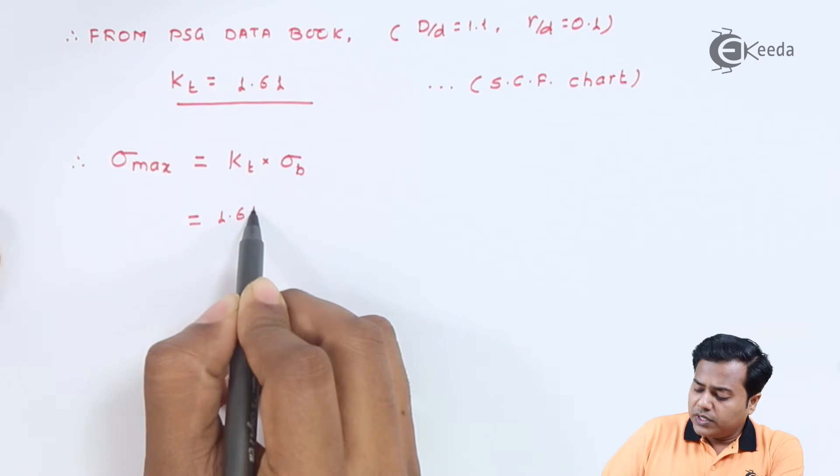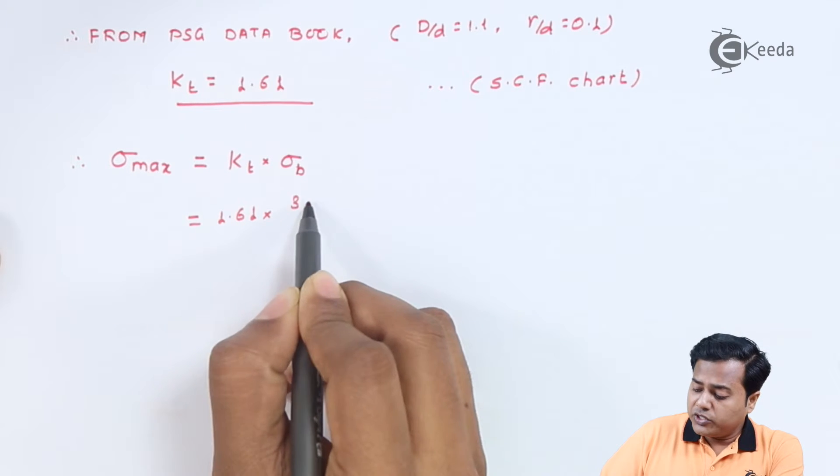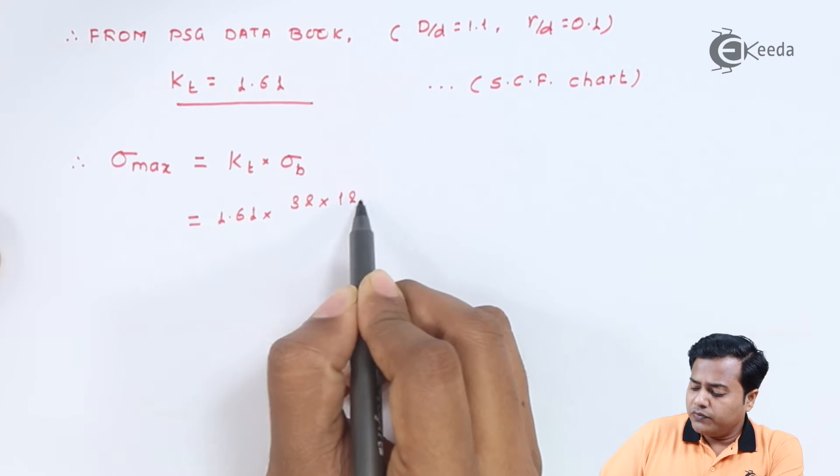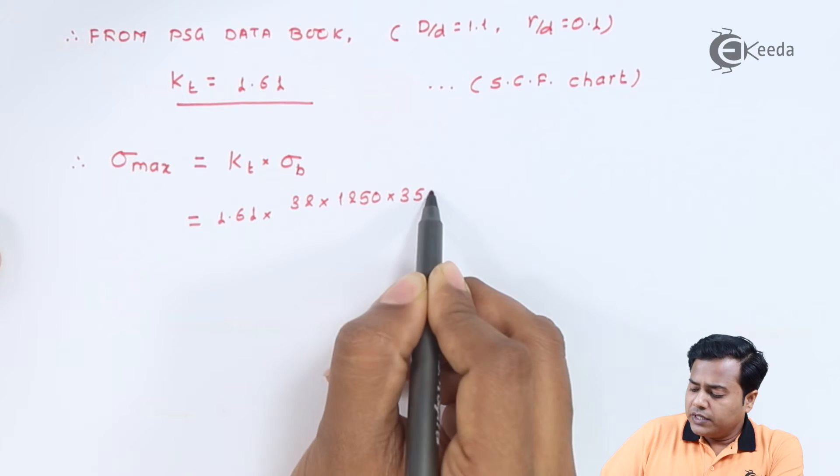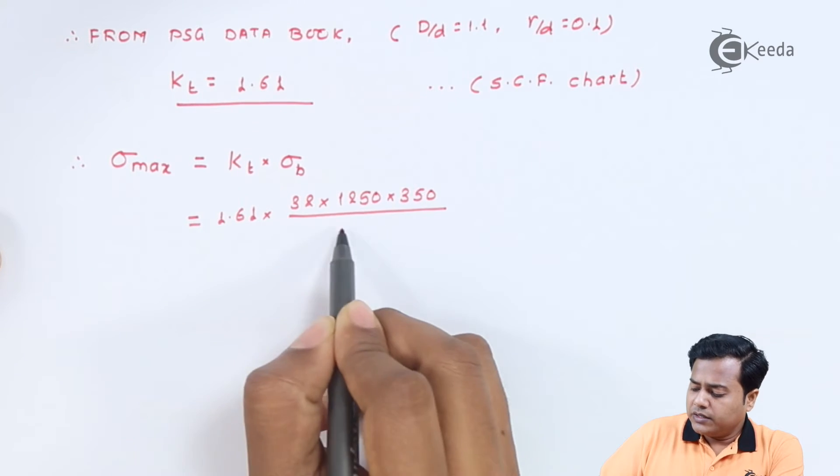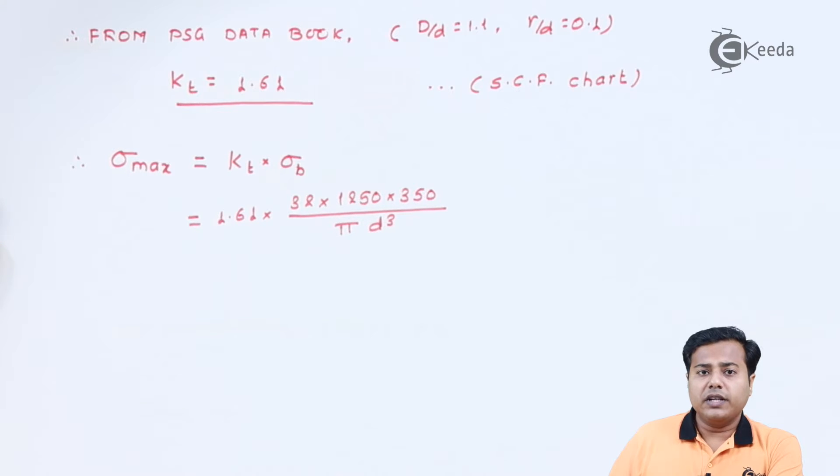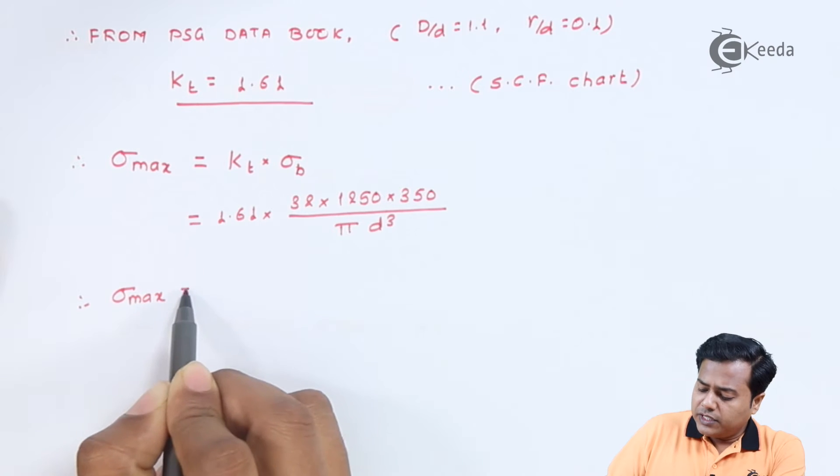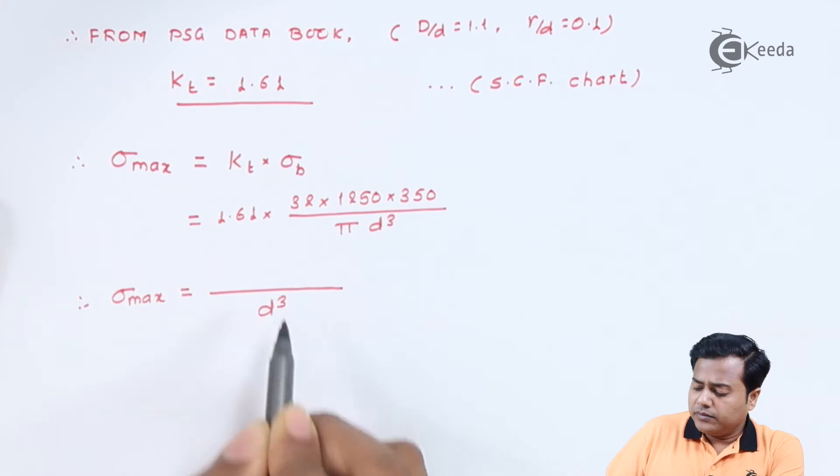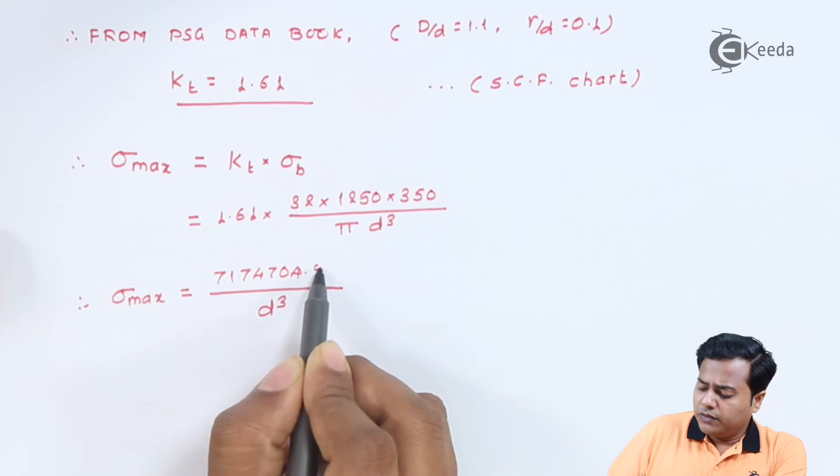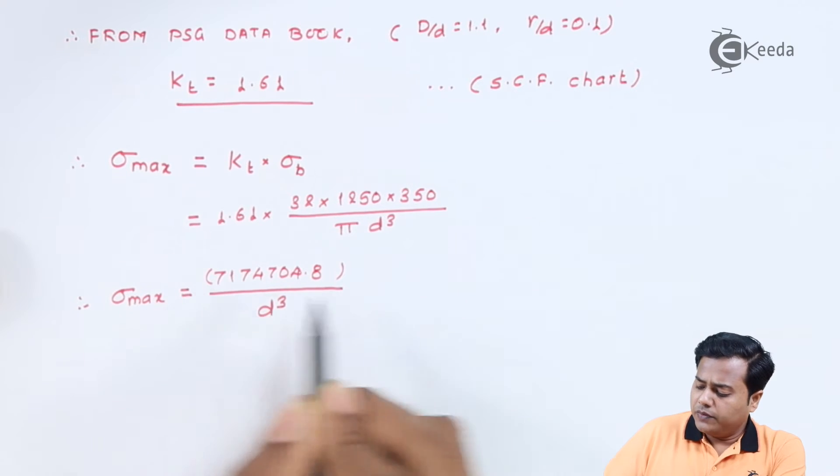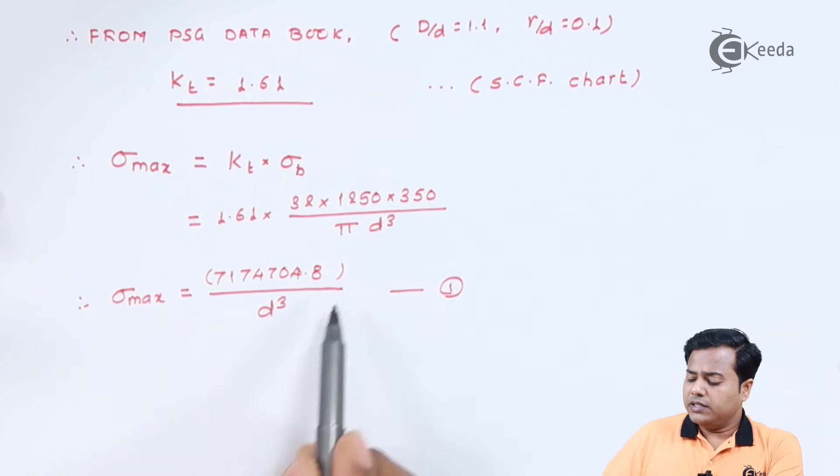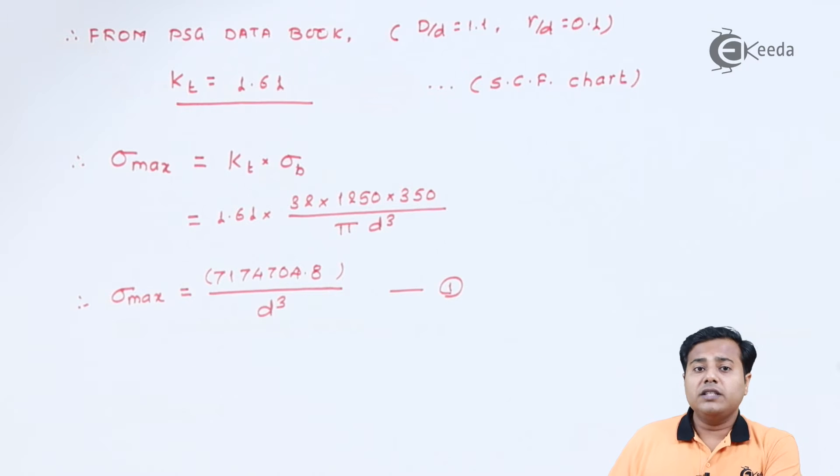Now this we can definitely refer to the stress concentration factor chart so that the maximum stress that may occur just because the stress is concentrated will be given by kt into the actual stress that is possible which comes out to be 1.61 into the earlier expression that we have derived: 32 into 1250 into 350 divided by pi d cube. As we evaluate it further we will get the maximum amount of stress that is possible is somewhere around this particular value. So in short this is the enhanced value of this stress in terms of diameter d when the stress concentration factor is considered in the fillet region.